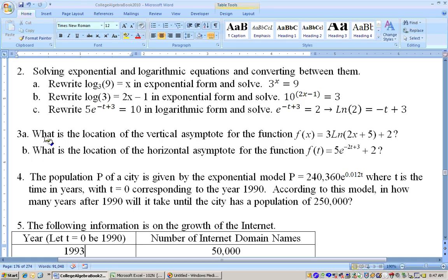That does it with that problem. Now, 3a says, what is the location of the vertical asymptote for the function right here? You can find your vertical asymptote by setting what's in the parentheses after your log equal to 0. If you set 2x plus 5 equal to 0, you get 2x equals negative 5 or x equals negative 5 halves, which is the same as negative 2.5. So this has a vertical asymptote at negative 2.5.